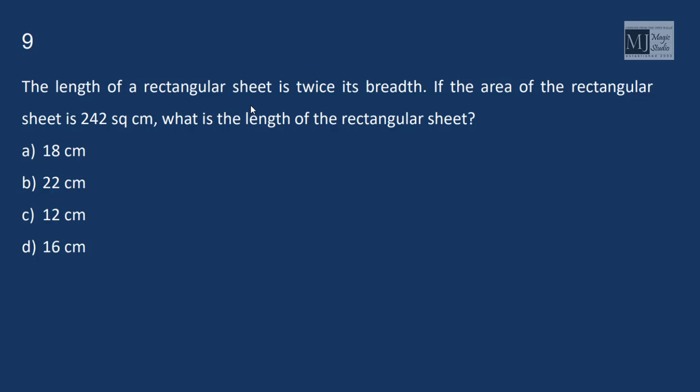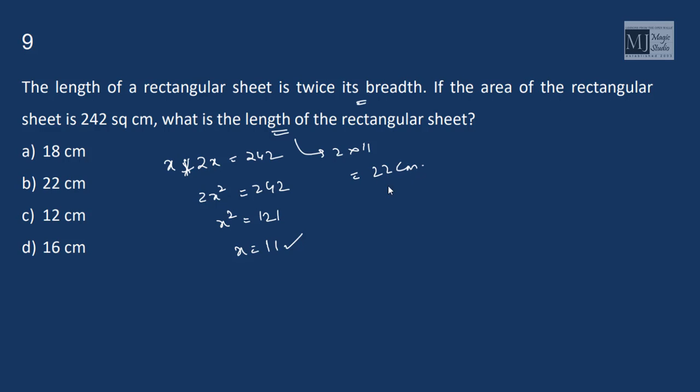The length of a rectangular sheet is twice its breadth. Breadth is x, length is 2x. The area of the sheet is 242, that means 2x square is 242, x square is 121, x equals to 11. So what is the length? Breadth is 11, length is 2 into 11, that is 22 centimeter.